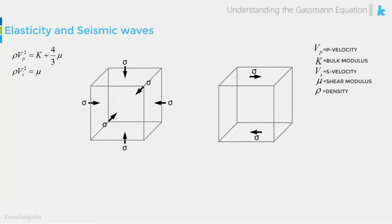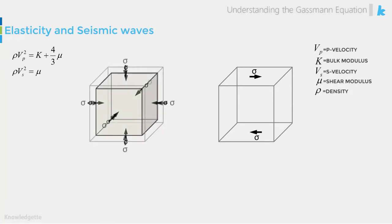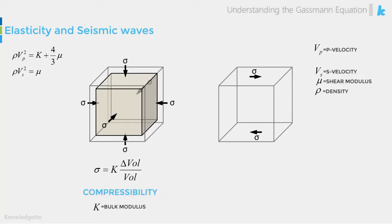The stress perpendicular to the cube will compress the rock ever so slightly, changing its volume. The bulk modulus is the ratio of the applied stress to the fractional volume change. The bulk modulus is a measure of the compressibility of the rock. Or to use a more common word, let's call this the stiffness of the rock.